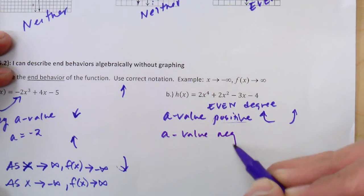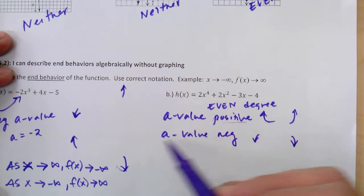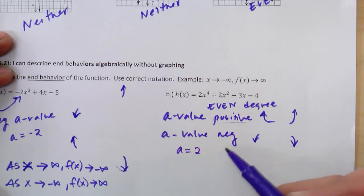When the a value is negative, they're going to finish in the same direction, but they're going to go down. So for this example, the a value happens to be 2, which is positive.